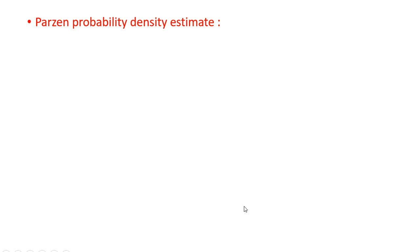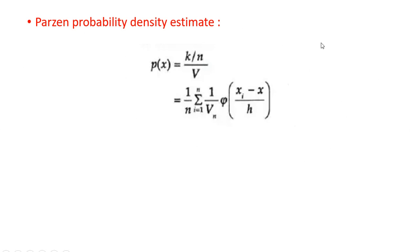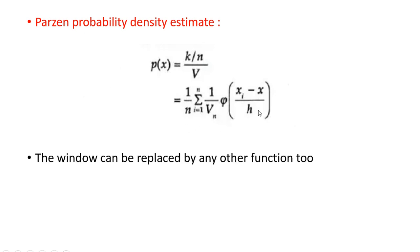The final formula for the Parzen probability density estimate is K/N divided by V. Since in Parzen Window we calculate the density at every data point and then sum it up, it becomes: P(x) = (1/N) · Σ_{i=1}^{N} (1/V_n) · φ((x_i - x) / h), where V_n is the total volume. Here we first find the probability density at every point and then sum it up.